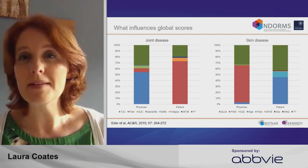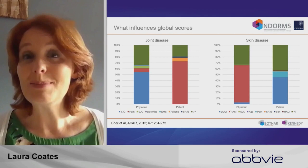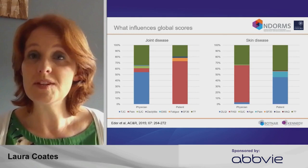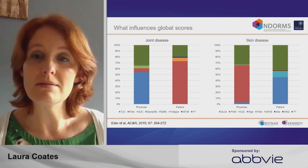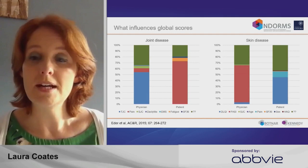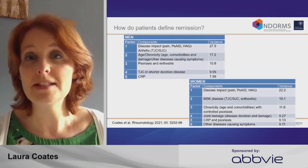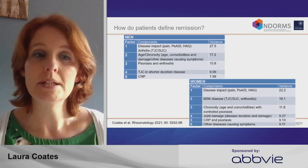That's similar when we think about the skin disease and psoriasis as well. When we think about skin disease activity, physicians are heavily influenced by the PASI score — how red and how widespread the psoriasis is. Whereas patients are influenced much more by how it impacts on them: their quality of life and the pain. So when defining remission, there's a very different concept that clinicians and patients are bringing to the table.